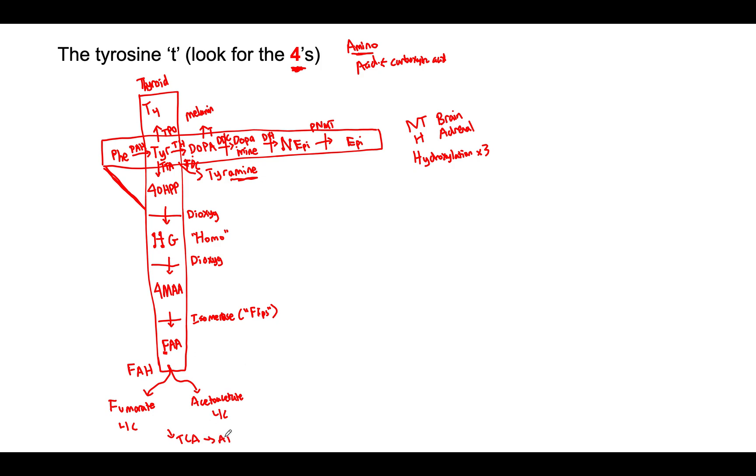I want to point out some important additional products here in this pathway. So 4-MAA and FAA can each be converted into a product called succinylacetoacetate, which can then be converted into succinylacetone. And this is a really important compound because it can actually cause liver cancer. And how would you get buildup of this product here? Well, what if you had a mutation in the enzyme FAH? Exactly. Well, that's what happens in the disorder tyrosinemia type 1.